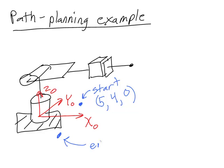The end point has a location in Cartesian coordinates of 5 in the x direction, negative 4 in the y direction, and 0 in the z direction. I've chosen this location as my end point because I want this to be a relatively simple example, but the procedure that we follow will be the same regardless of the location of the start and end points.